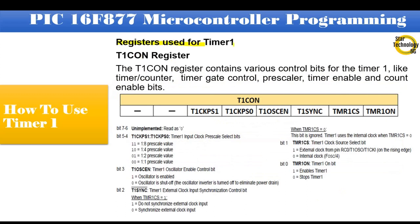Registers used for Timer 1: T1CON register. The T1CON register contains various control bits for Timer 1, like timer/counter, timer gate control, prescaler, timer enable and count enable bits. Bits 7 and 6 are unimplemented and read as 0.